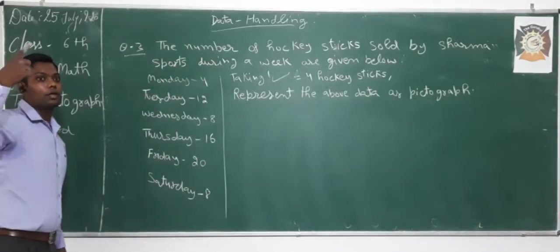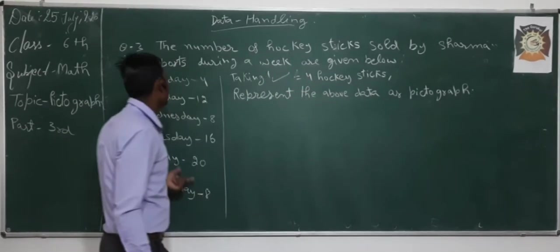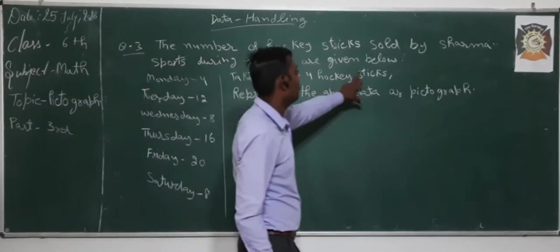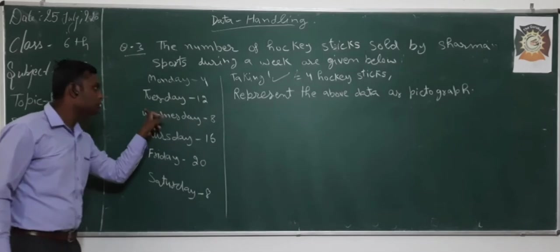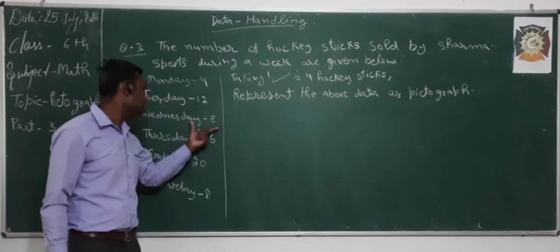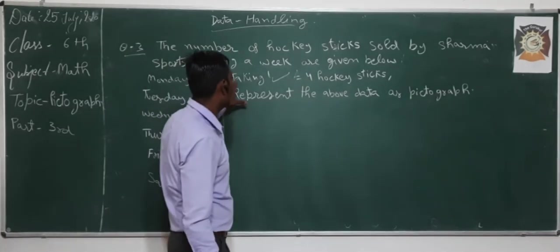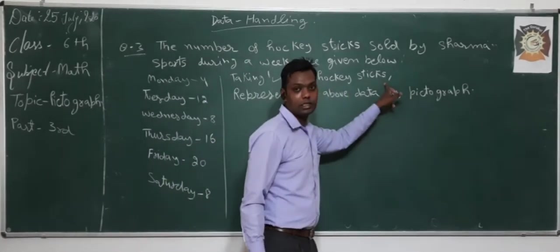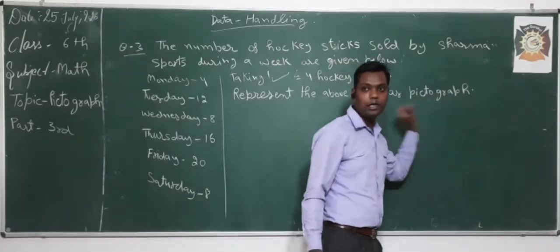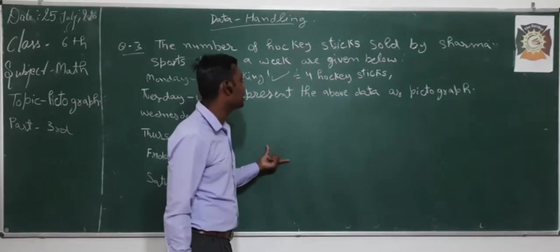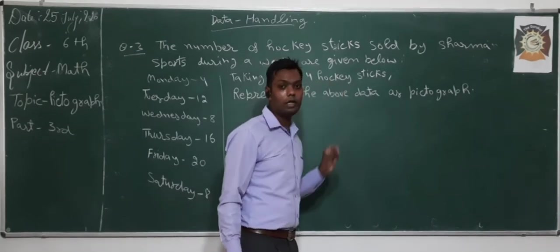Now the last question: the number of hockey sticks sold by a sports shop during a week is given — Monday: 4, Tuesday: 12, Wednesday: 8, Thursday: 16, Friday: 20, Saturday: 8. One symbol represents 4 hockey sticks, and we have to represent the above data as a pictograph using this symbol.